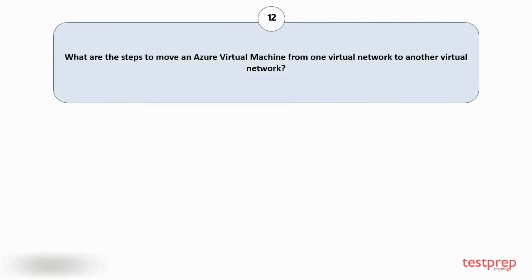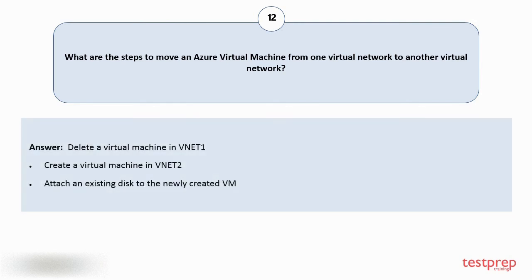Question number twelve: what are the steps to move an Azure virtual machine from one virtual network to another virtual network? Your answer is: one, delete the virtual machine in VNet 1; two, create a virtual machine in VNet 2; three, attach the existing disk to the newly created VM.